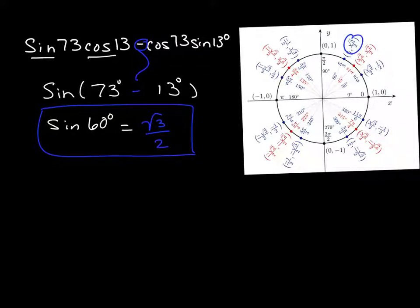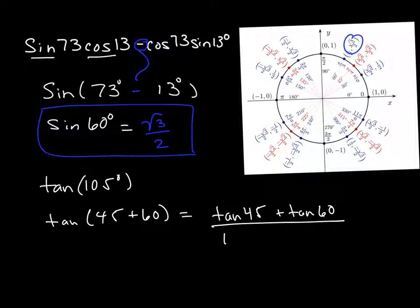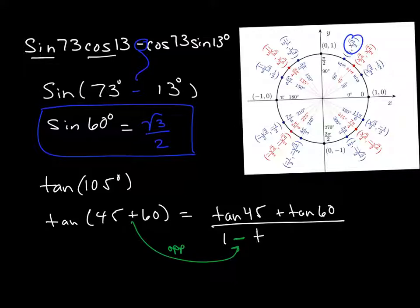Now I want to use the tangent function. If we have the tangent of 105°, we break that up by looking for unit circle values that add or subtract to equal 105°. That is the tangent of (45° + 60°). The tangent formula keeps sine on top: tangent of 45° plus tangent of 60°, all over 1. The sign in the denominator changes — it's always opposite to what we started with — giving 1 minus tangent of 45° · tangent of 60°.